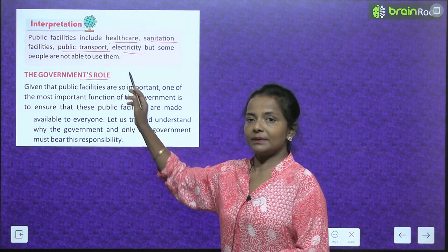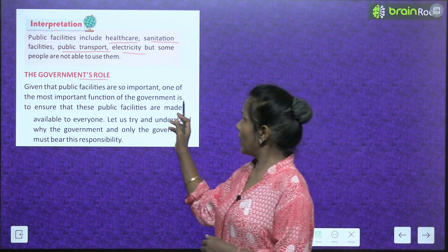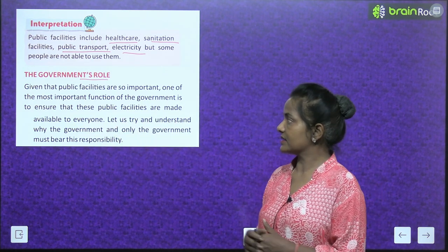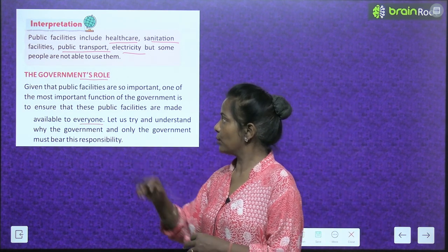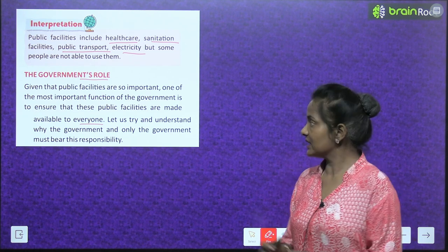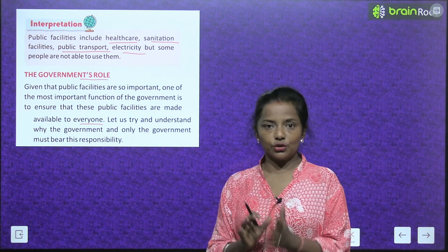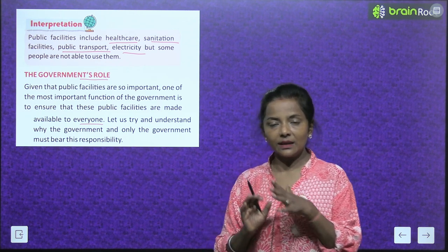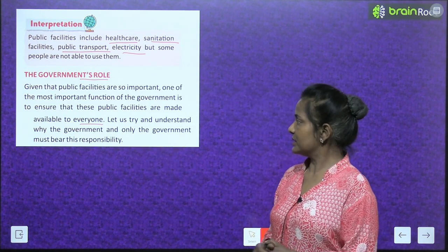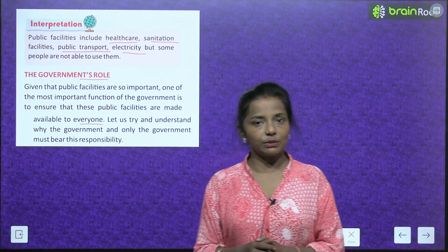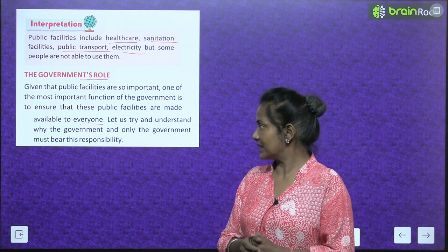The government's role. Ab government ka kya role hai? Given that public facilities are so important, one of the most important functions of the government is to ensure that these public facilities are made available to everyone. Government ko yeh ensure karna zaruri hai ki yeh facilities sab tak pahunch rahi hain ya nahi. Let us try and understand why the government — and only the government — must bear this responsibility.